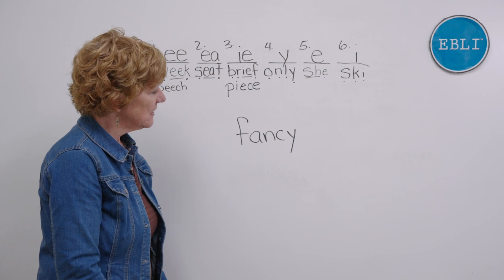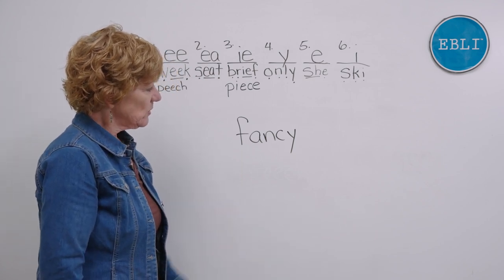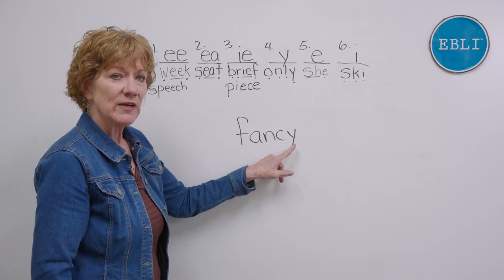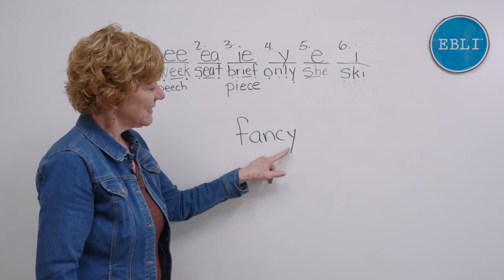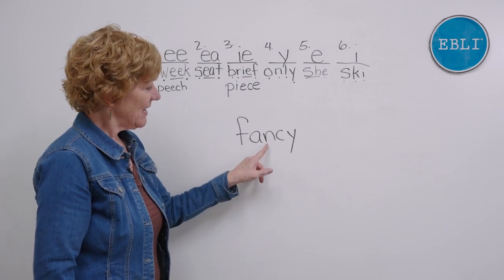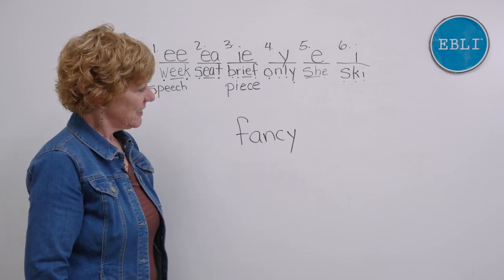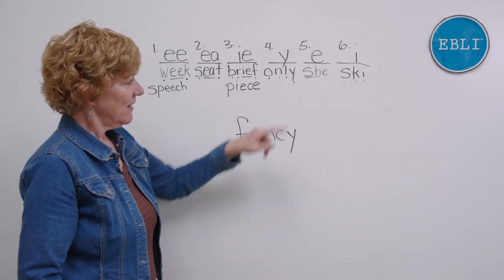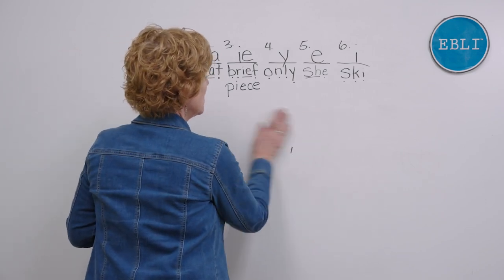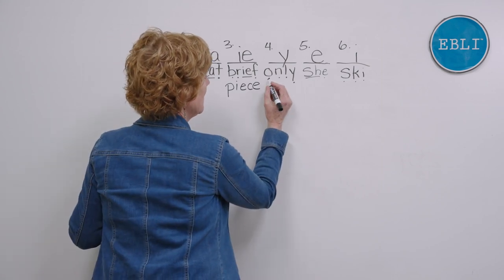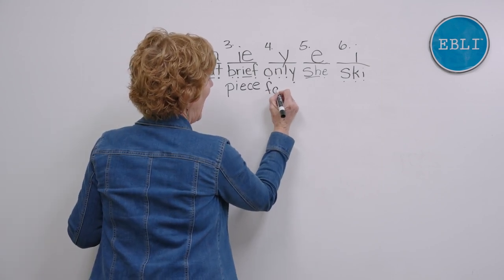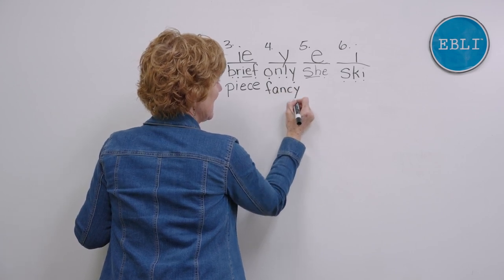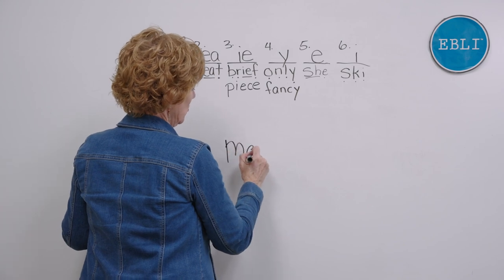What is this word? We've got that first part and here, when E, I, or Y is next, so we've got 'fancy.' F-A-N-S-E. Where is this E spelling going? This is our spelling like in 'only,' so under column four, say the sounds as you write 'fancy.' F-A-N-S-E. Fancy. Beautiful job - I'm sure you're saying those sounds.